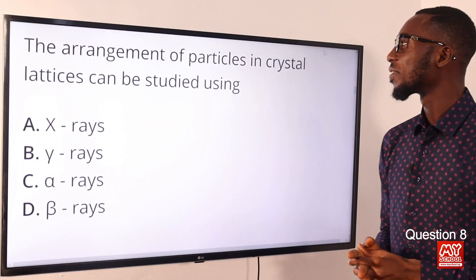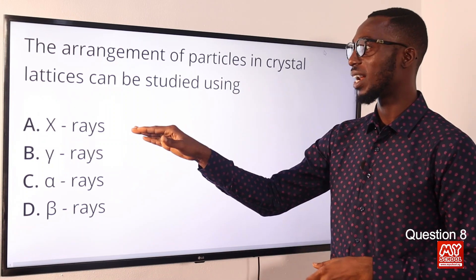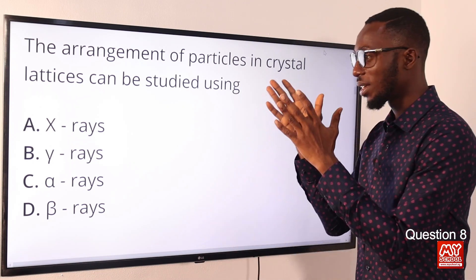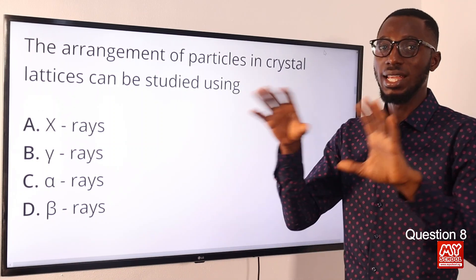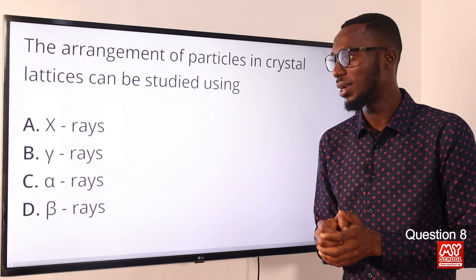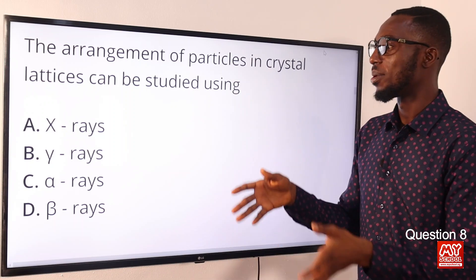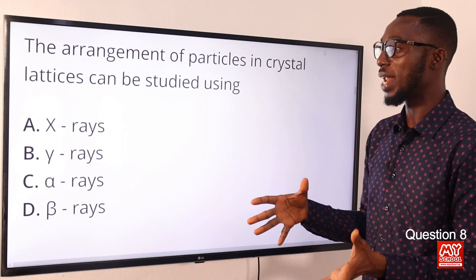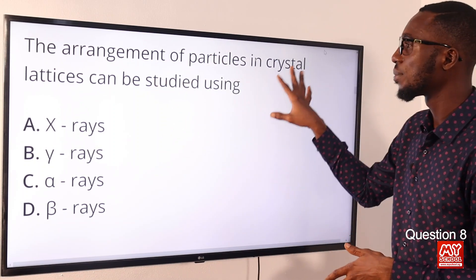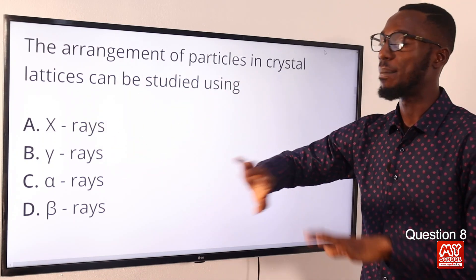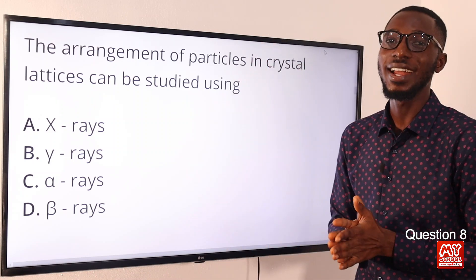Question 8: The arrangement of particles in crystal lattices can be studied using what? We are talking about X-ray analysis. Even big organic molecules like proteins are studied using X-rays. Metal particles in lattice form — X-ray analysis. Ionic compounds and electron density maps — X-ray analysis. When it comes to studying the arrangement of particles in crystal lattices, that is X-ray. The correct option is option A for X-rays.